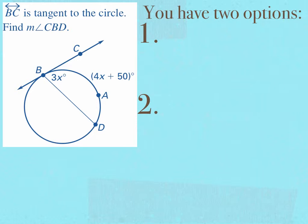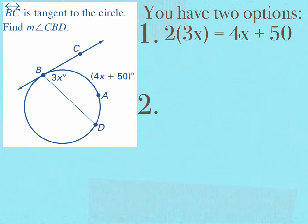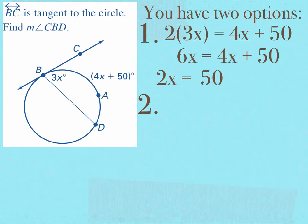Another example states that line BC is tangent to the circle. It asks us to find the measure of angle CBD. It tells us that angle CBD is 3x, and the intercepted arc, arc BD, is 4x plus 50. I have two options to solve for x. The first option would be to multiply my angle measure by 2 and set that equal to my arc length: 2 times 3x equals 4x plus 50. Notice that I'm multiplying my angle measure by 2, but leaving my arc length alone. 2 times 3x is 6x, so 6x equals 4x plus 50. Subtract 4x on both sides: 2x equals 50. Divide by 2, and you get x equals 25.